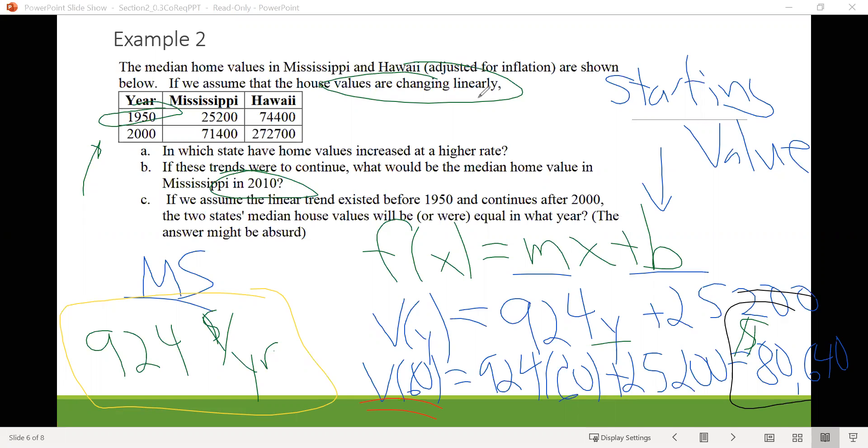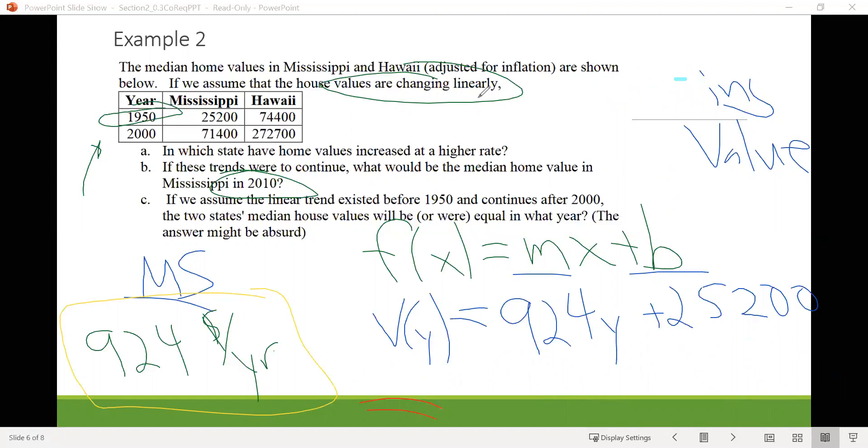All right, now part C. If we assume the linear trend existed before 1950 and continues after 2000, the two states' median house values will be or were equal in what year. We're told the answer might be absurd, so that would be something to keep in mind. So again, here we want to find out when two things are the same. And we're working with linear functions, so we probably want to do what? That's right, we want to find linear functions to represent the values for both states and then set them equal and solve.